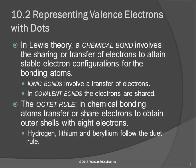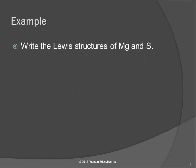The guiding principle we're going to use is called the octet rule — atoms are going to share or transfer electrons in order to get an octet of eight electrons. Of course we have some exceptions: hydrogen, lithium, and beryllium are going to follow the duet rule. They're going to try to be like helium with only two electrons — they're too small to handle eight electrons.